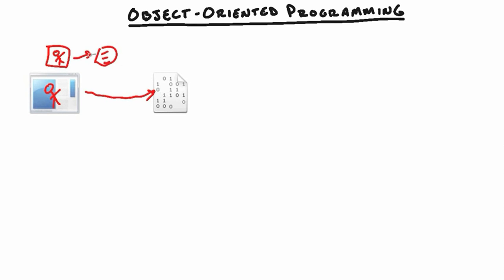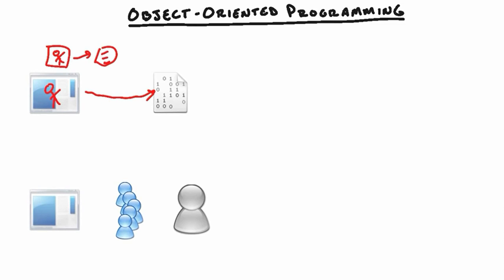Now we've got the same code in multiple places. What happens when a couple of months down the road we find a bug and need to fix it? That's right — we need to go and fix it here, and fix it here again. That's how object-oriented programming can help alleviate coding issues — the big one being code reuse, or the lack thereof in our first example.